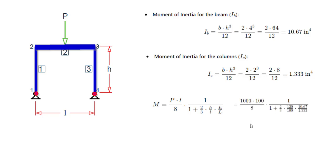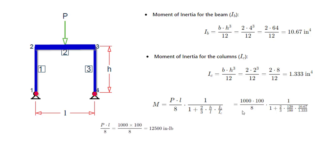To calculate WL by 8, we put in the values from the data: 1000 pounds into the L value divided by 8. For the 1 plus 2/3 H by L term, H is 120 and L is 100 — the height and length values. The inertia value we already calculated can be substituted here. Working out the WL by 8 term gives us 12,500 pound-inches.